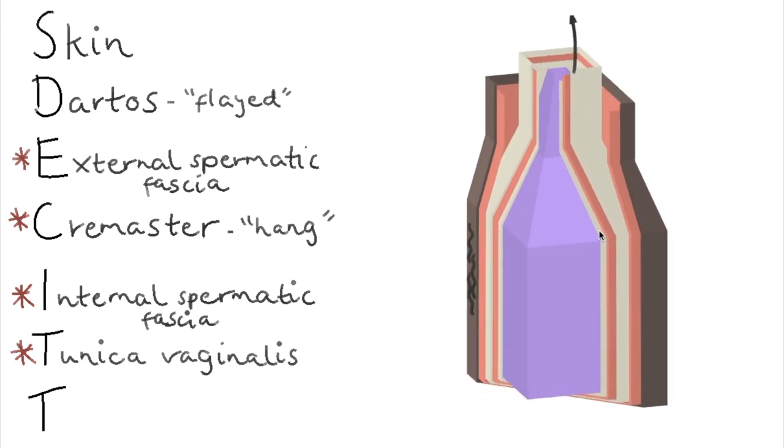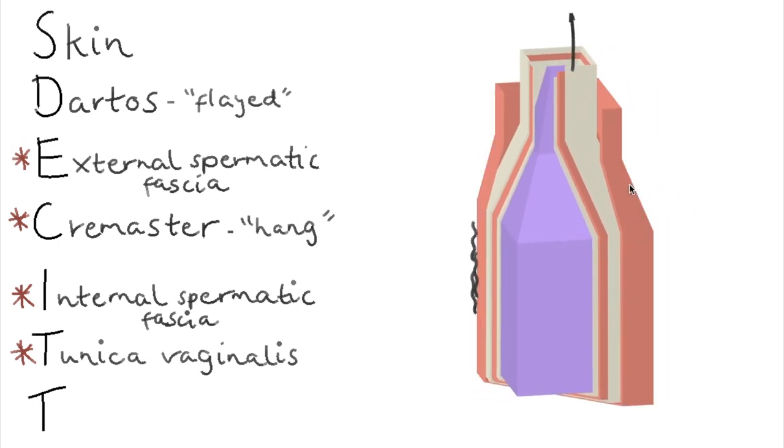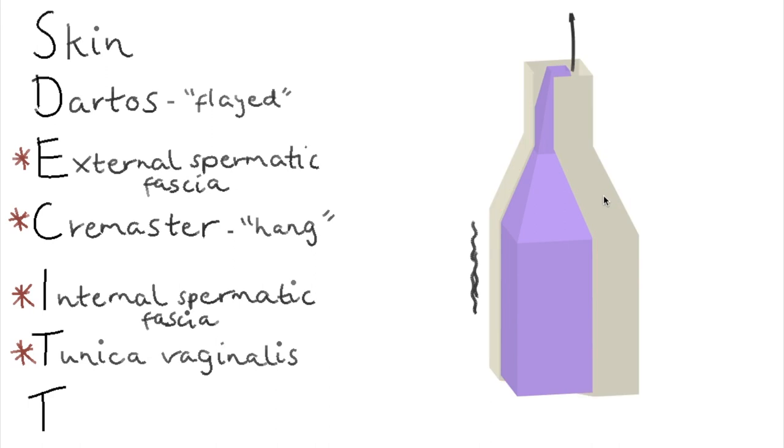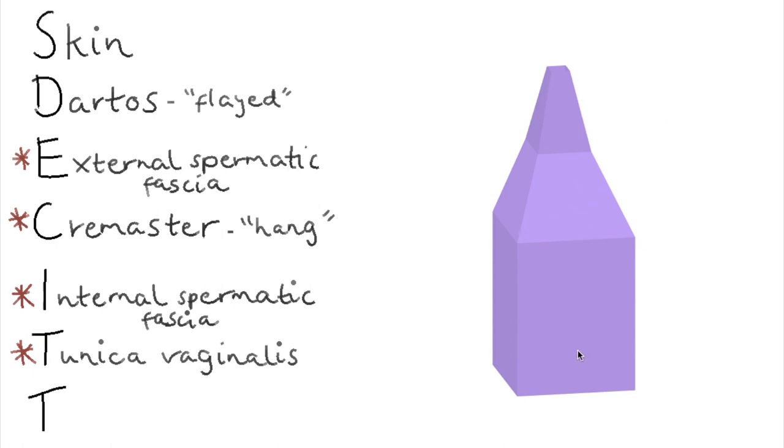Now I'm going to remove the outer layers, those outer layers there, to get a better look at this last one. So the tunica vaginalis is actually an extension of the peritoneum. So when the testicle pushes out of the abdomen, this is the part of the peritoneum that it takes with it.